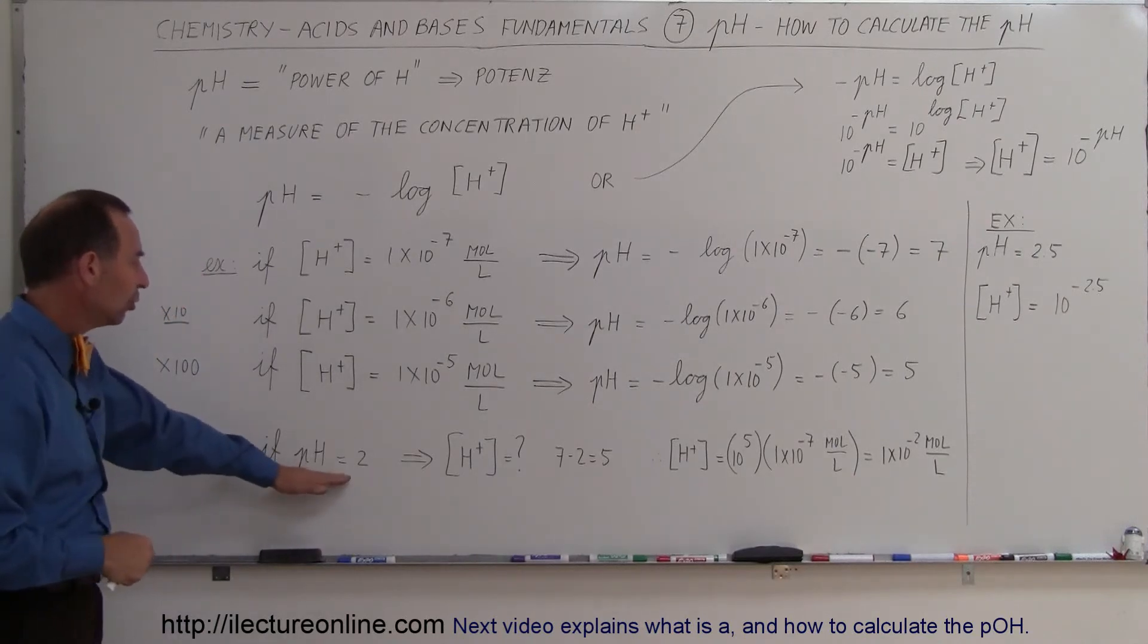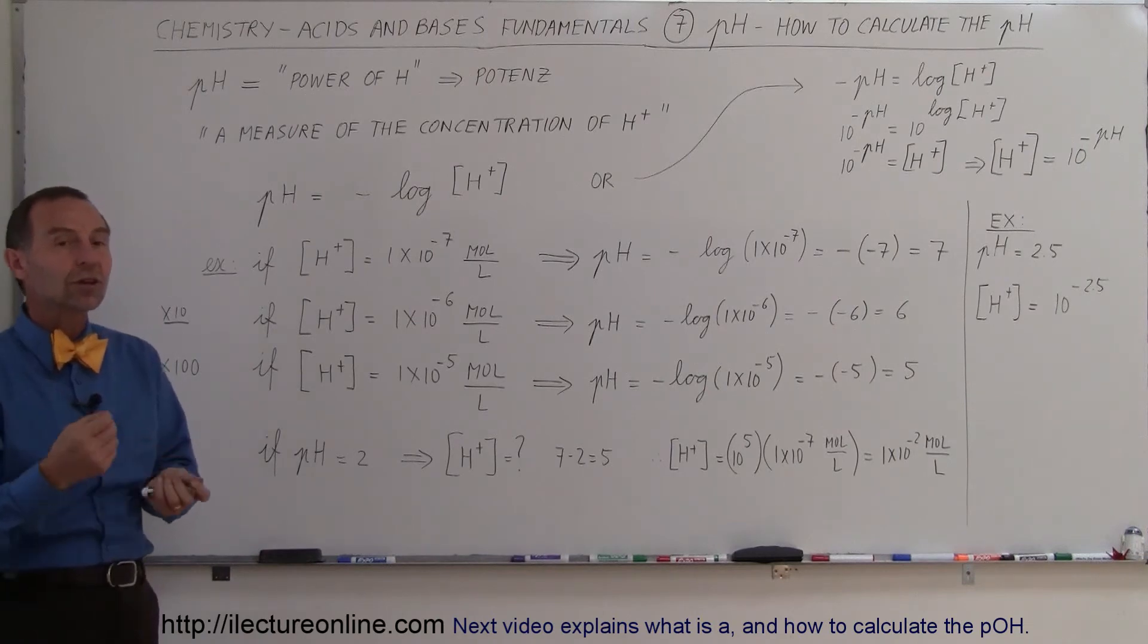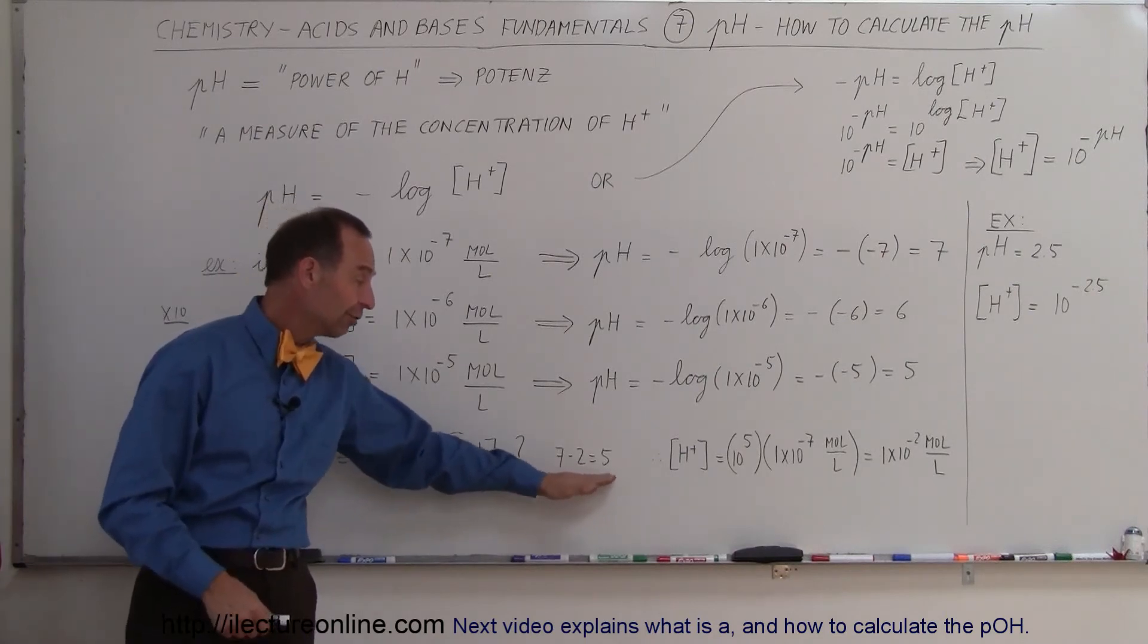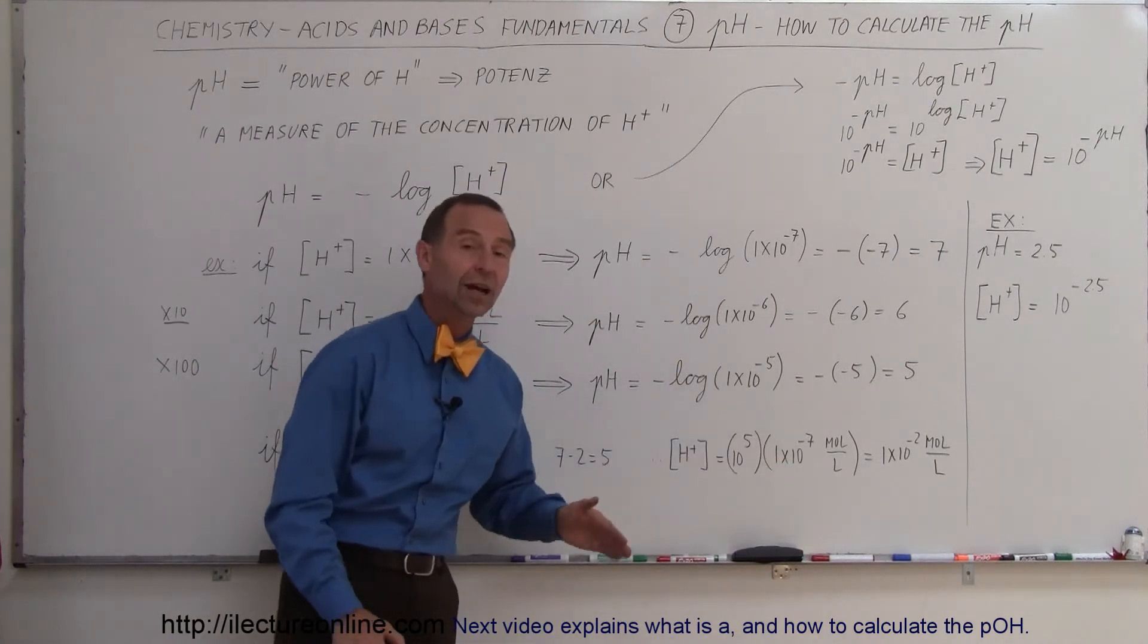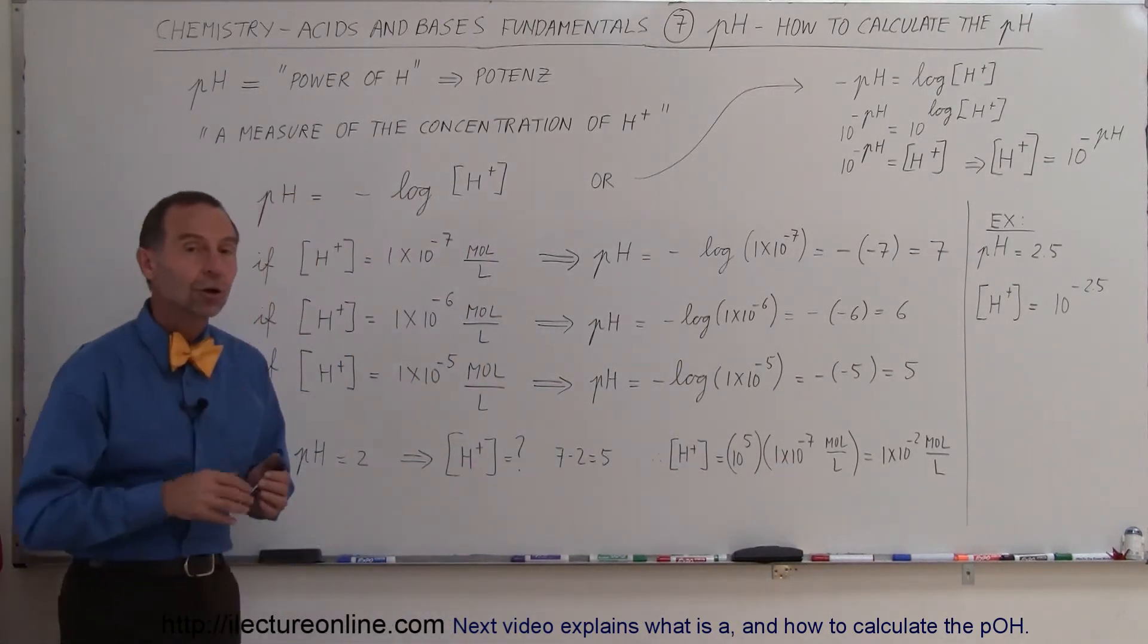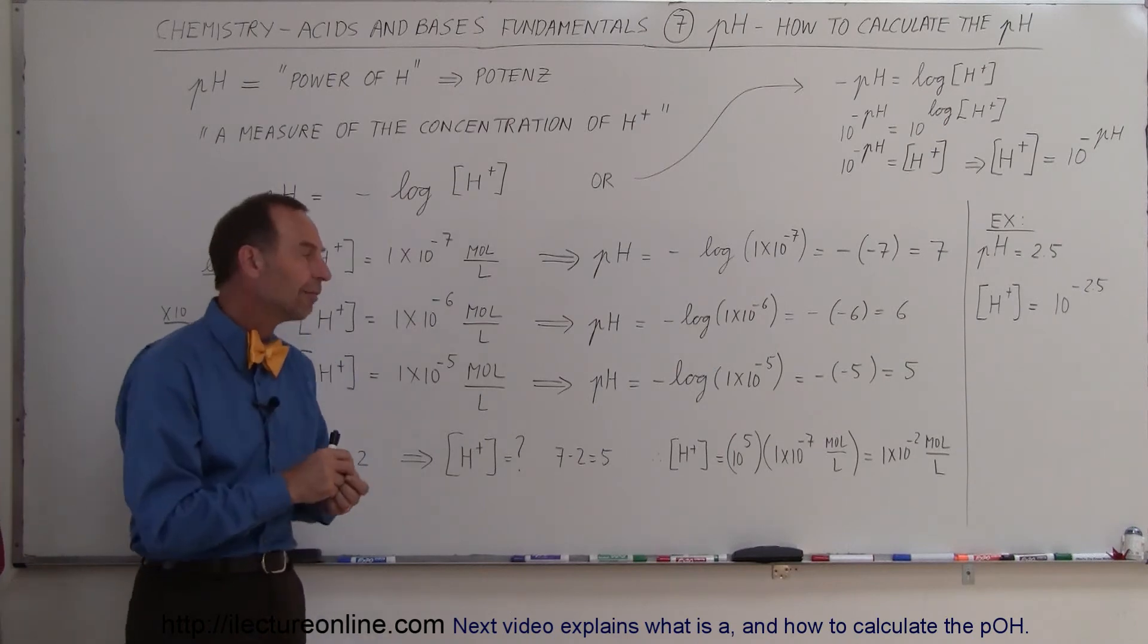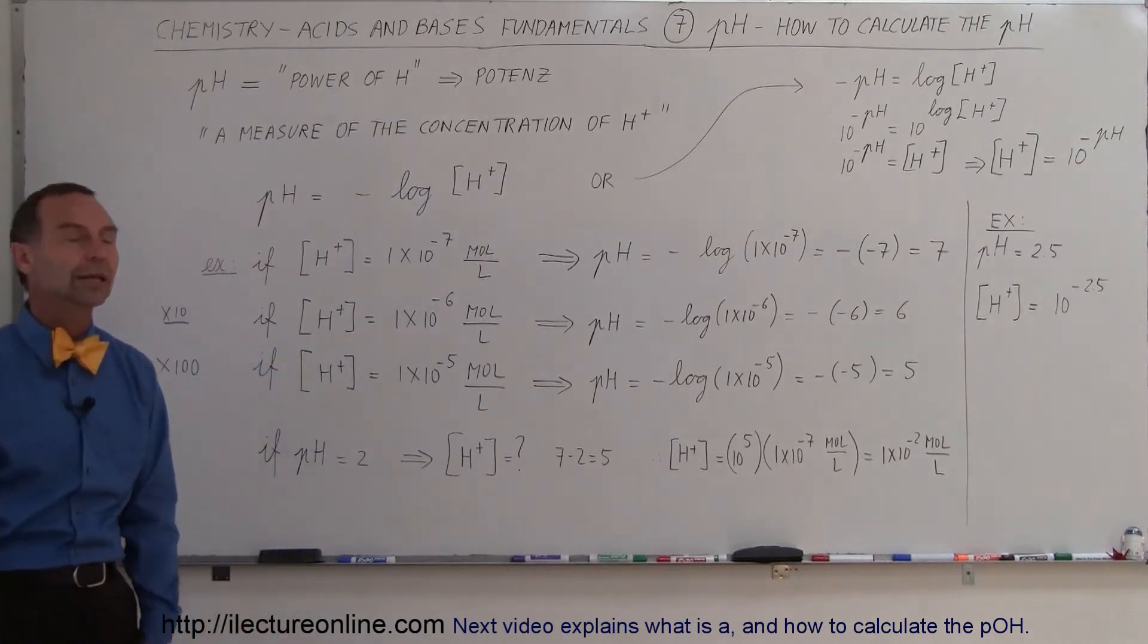Now, of course, if the pH is 2, if you then ask yourself the question, how many hydrogen ions are there? You take the difference in pH number, so the difference between 7 and 2 is 5. Then you say, well, it has 10 to the 5th times as many hydrogen ions as when it is pH 7. So pH 2 means 100,000 times as many hydrogen ions as pH 7. And so that's how we find that the concentration would be 1 times 10 to the minus 2 moles per liter.